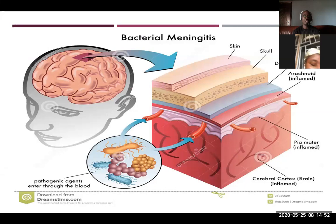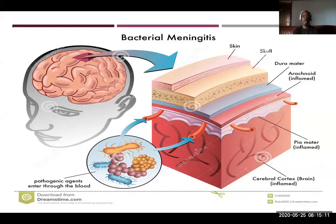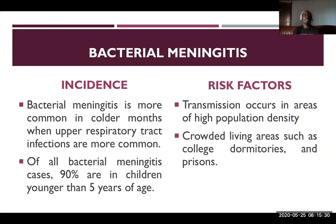When the bacteria gain access into the meninges or surroundings of the brain and spinal cord, they cause the layers to become inflamed. When these layers become inflamed, it goes a long way to also affect the brain itself, leading to many complications. That is where someone would call it cerebrospinal meningitis. Bacterial meningitis can also be known as septic meningitis because of its ability to cause widespread infection within the bloodstream, allowing it to move from one part to another and bring out other undesirable complications.